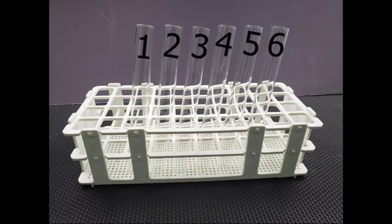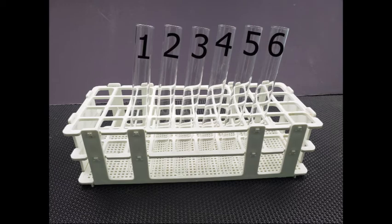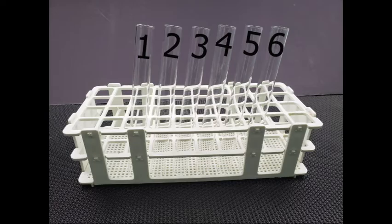Procedure. Use the marker to label six test tubes one through six. Place the test tubes in numeric order in the test tube rack.